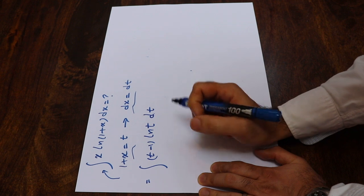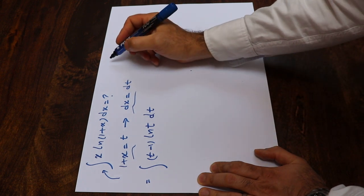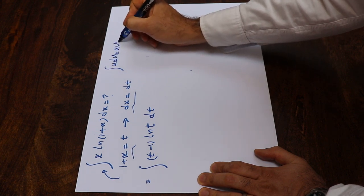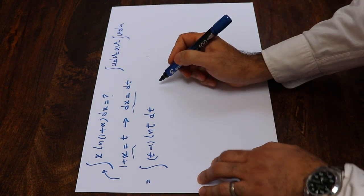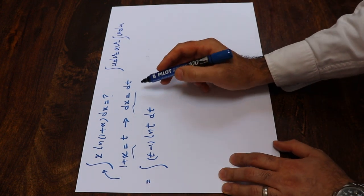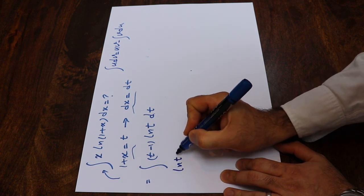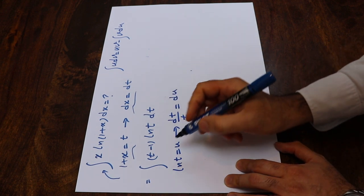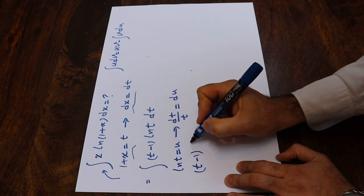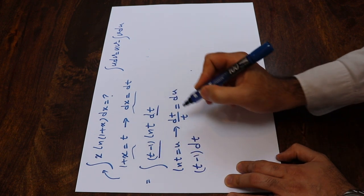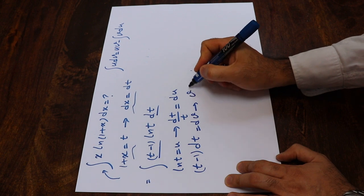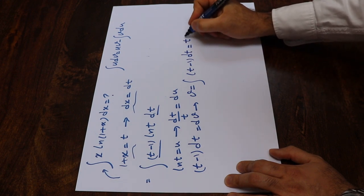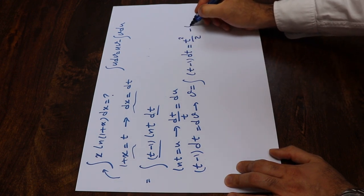This integral can be solved using the formula for integration by parts: the integral of u dv equals uv minus the integral of v du. Here, I define ln(t) as u, so dt over t will be equal to du. I define (t minus 1) dt as dv, so v equals the integral of (t minus 1) dt, which equals t squared divided by 2 minus t.